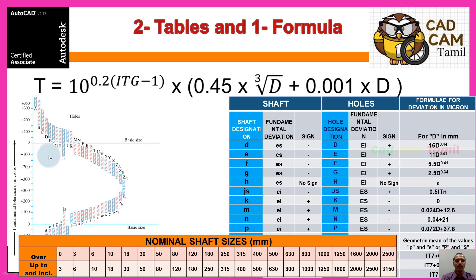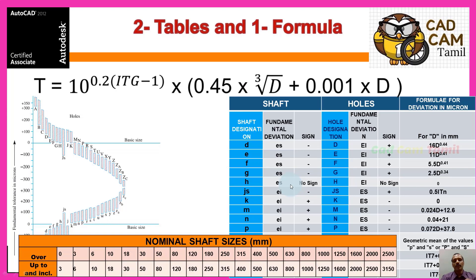If you know the GD&T table, we need: first, the diameter range; second, the IT formula; third, the fundamental deviation formula. So fundamental deviation, basic size, particular zone, and RM is fundamental deviation. Three tables: diameter table, fundamental deviation table, and one formula. You can have the standard symbols and sizes. Very simple.